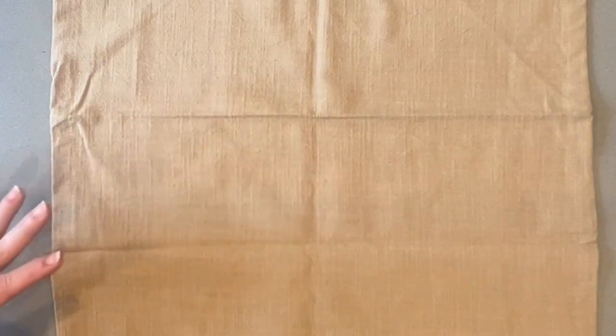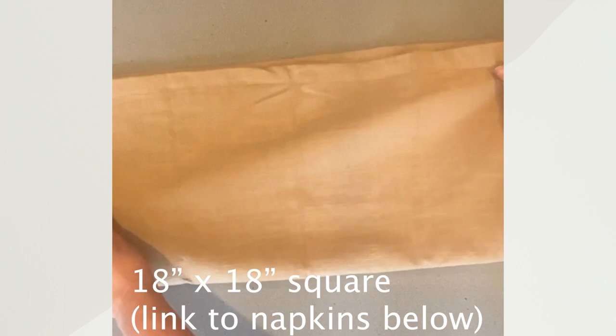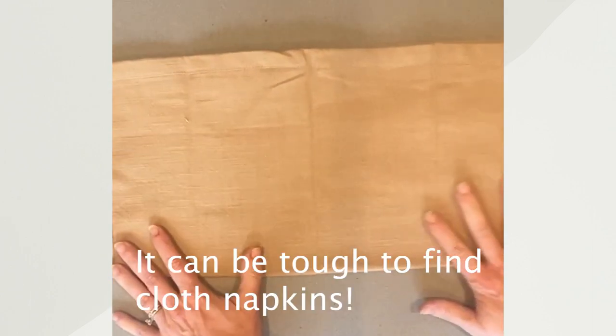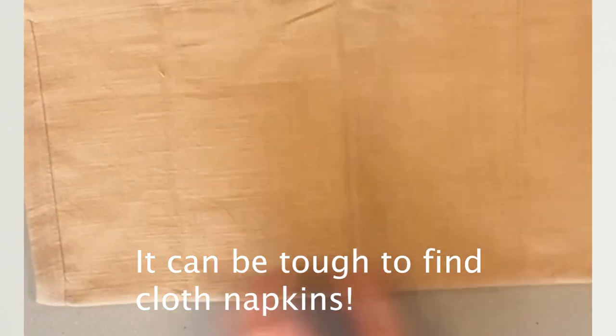We're going to do a simple pocket fold. Start with it open and fold it in half. If you have a wrong or right side you want to see the wrong side up. Next fold it in half. We have a square and then you're going to fold the triangle down.